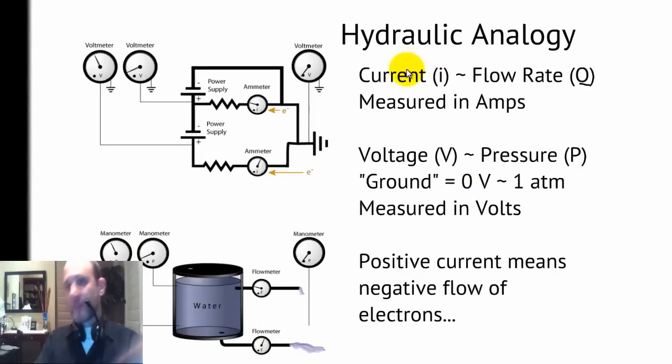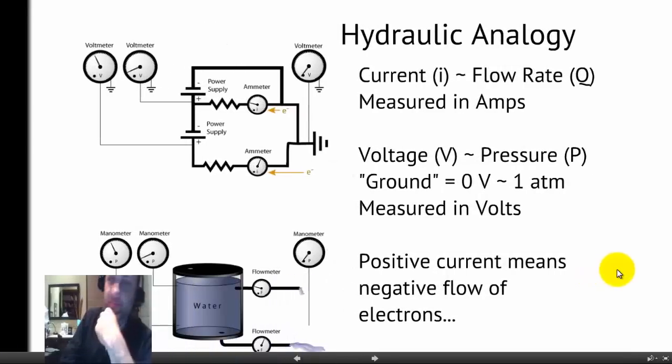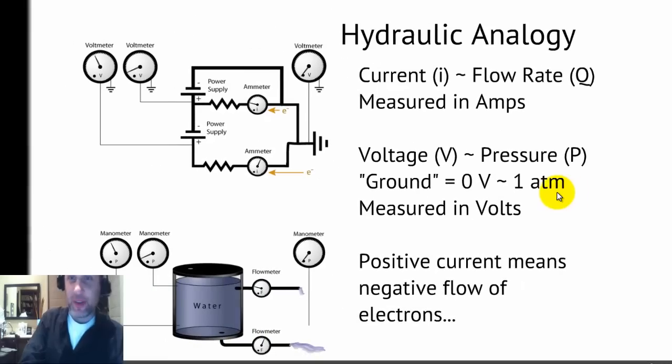The hydraulic analogy. Current's a lot like the flow rate of water or any other fluid. It's measured in amps. Voltage is a lot like pressure. It's measured in volts compared to ground. You can imagine if you've got a tank full of water and it's at high pressure and you make a little hole in it, it's going to spew out water very fast. If it has low pressure, it's going to just leak out just a little bit.